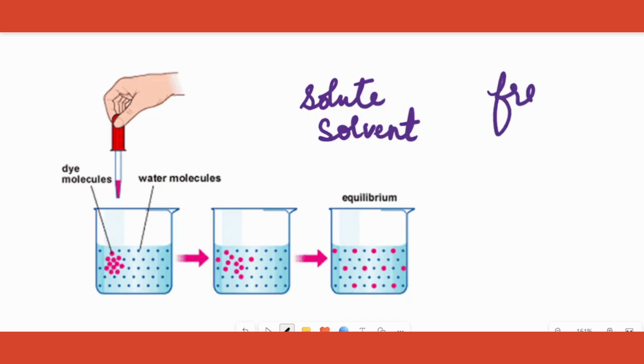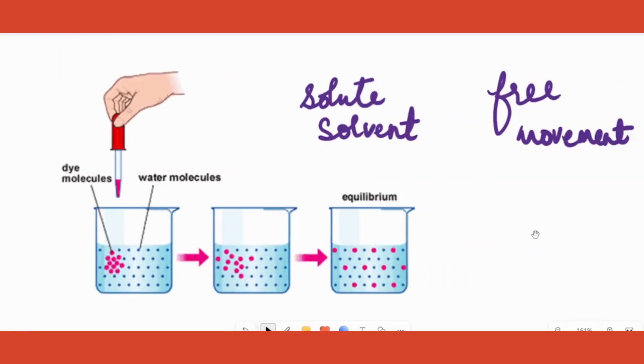All right, so let's define it again. It is a movement of either the solute or the solvent, without any energy requirement, from high concentration area to low concentration area. Let's understand it with this example. Okay, so you have a beaker in which there is water to which you are adding some molecules of dye.